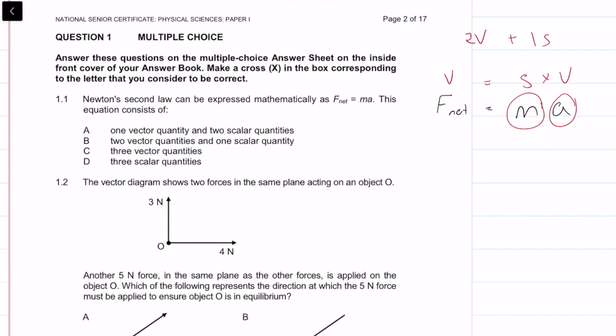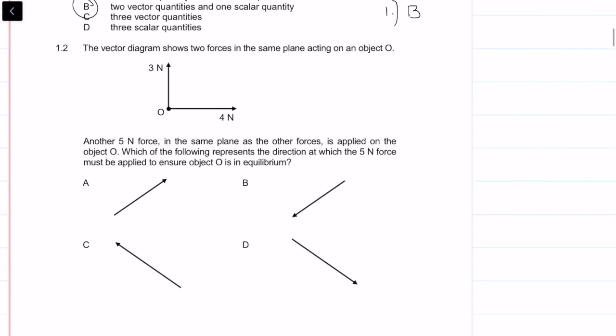Two vectors and one scalar — that is option B. So question 1.1 is B.